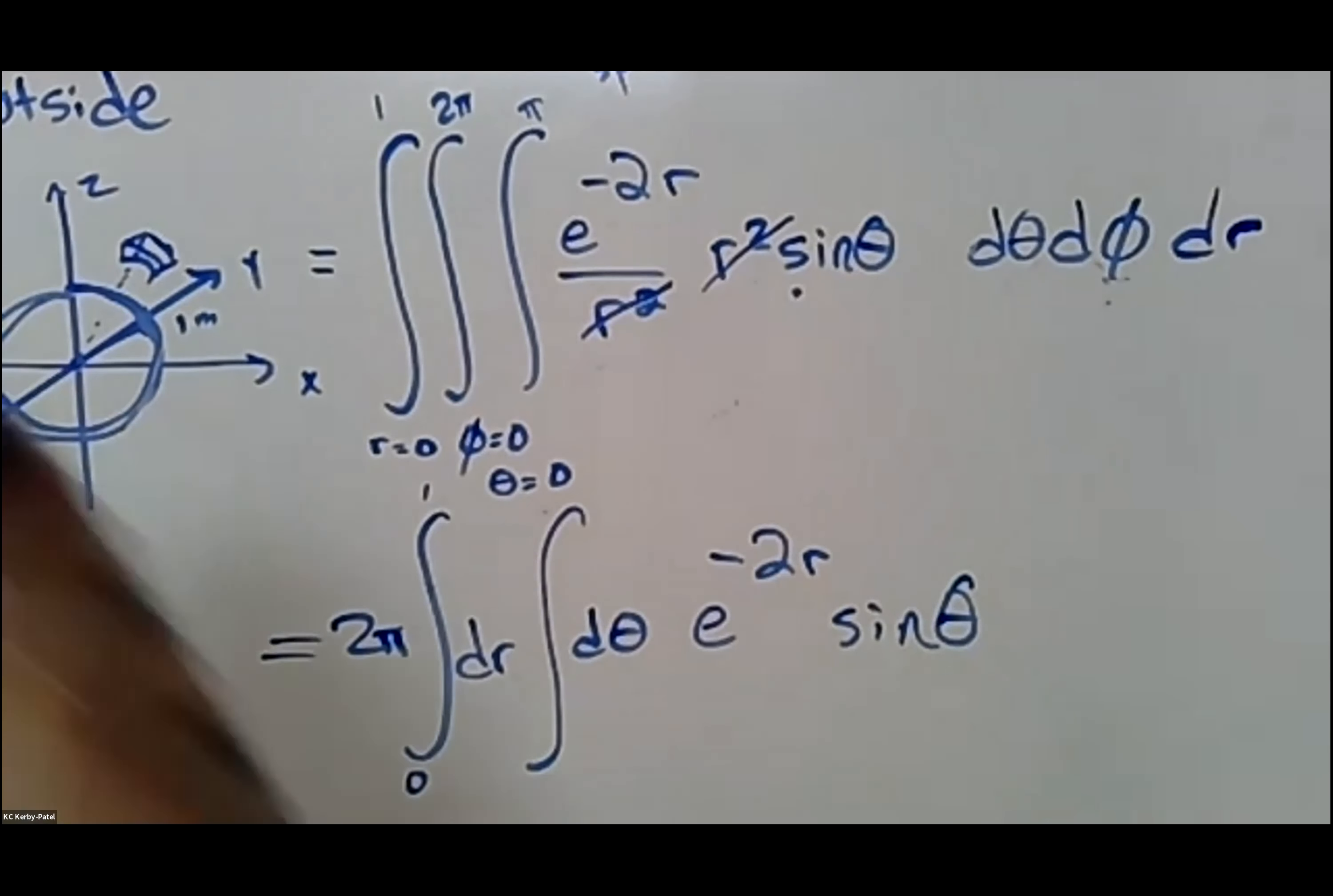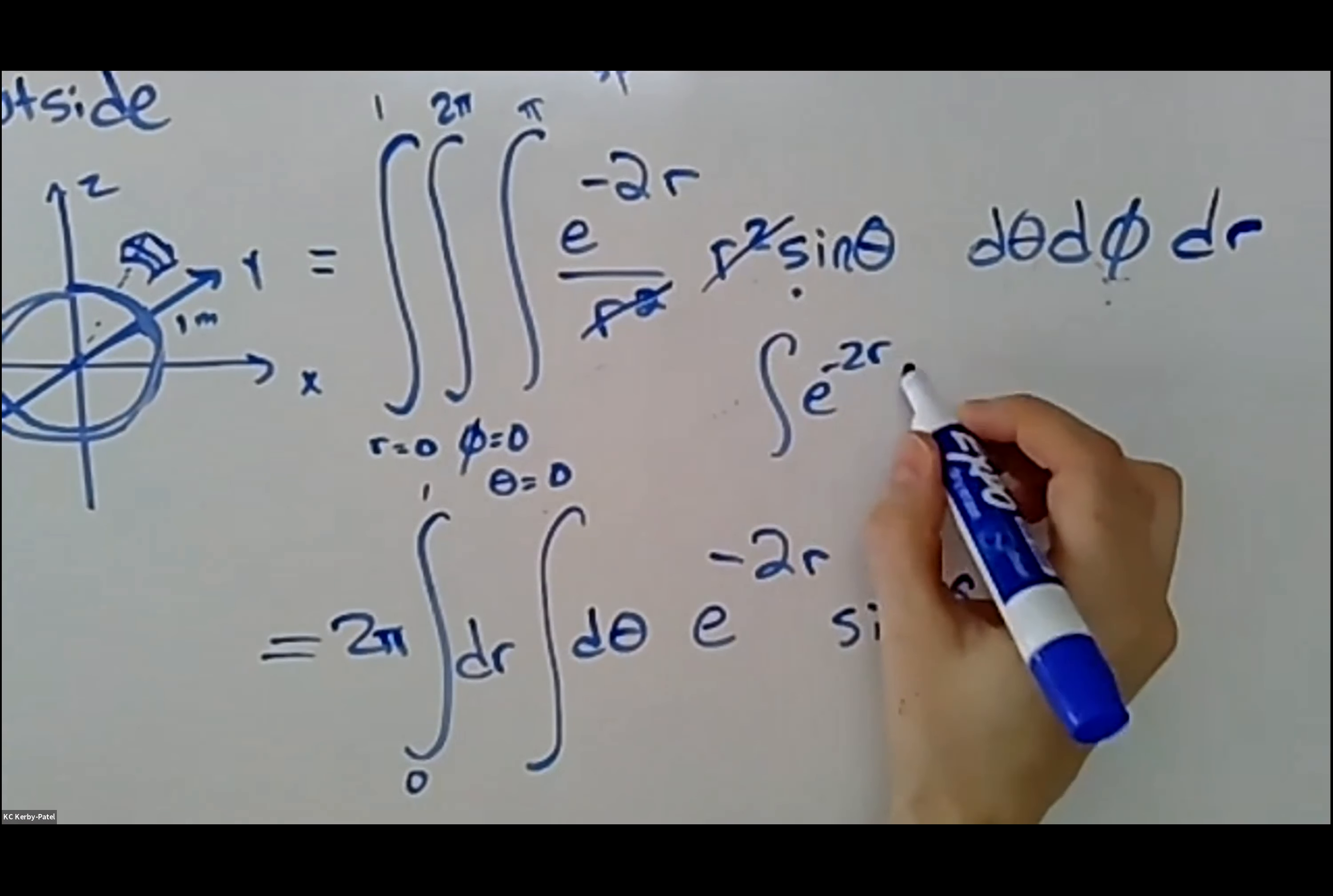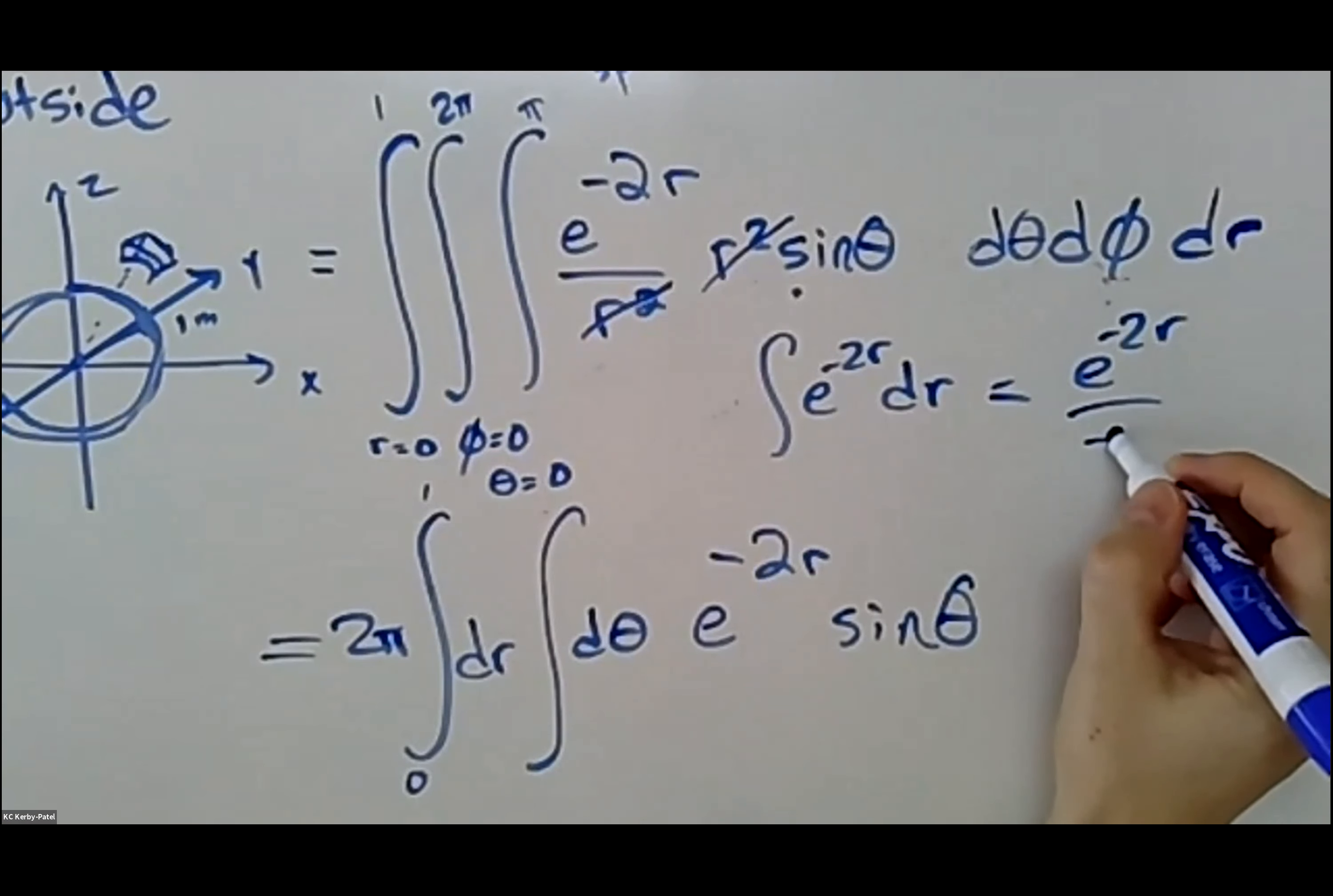Both of these things, they don't depend on each other either. The variables are nicely separated, so this is pretty easy. The integral of e^(-2r) dr is going to be e^(-2r) over -2.